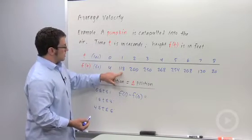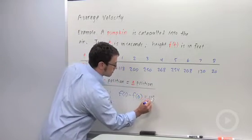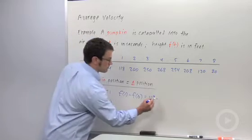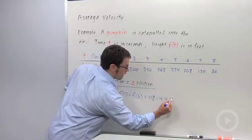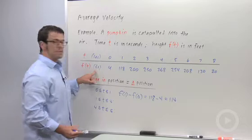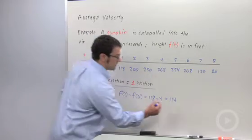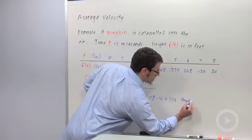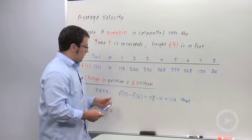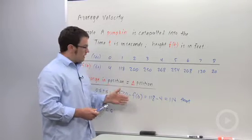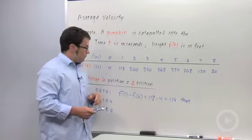Now f of 1 is 118. f of 0 is 4. And so I'd get 114. But remember, the units are feet. So this would be in feet. So that means that the pumpkin over that first second increases in height 114 feet.